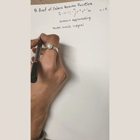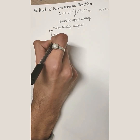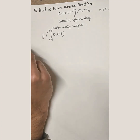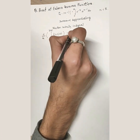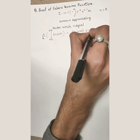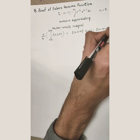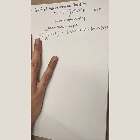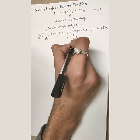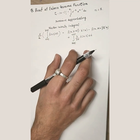The Newton-Leibnitz rule: if you have an integral where the limits are functions of x and the integrand is a function of x and t, integrated with respect to dt, and you differentiate this whole function with respect to x, you get: the integrand evaluated at the upper limit times the derivative of the upper limit, minus the integrand evaluated at the lower limit times the derivative of the lower limit, plus the integral of the partial derivative of the integrand with respect to x.